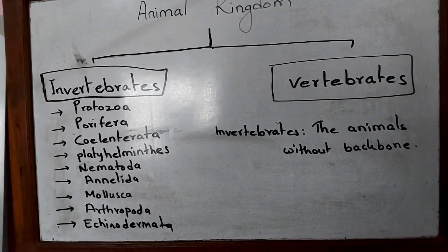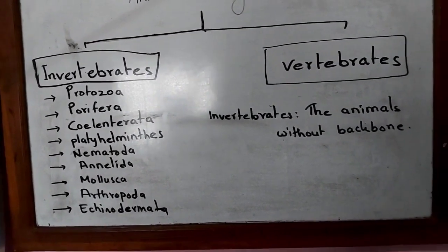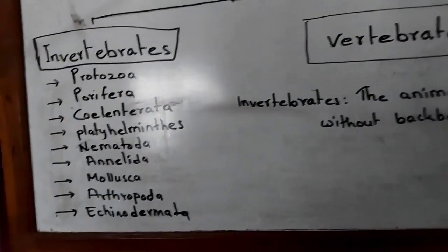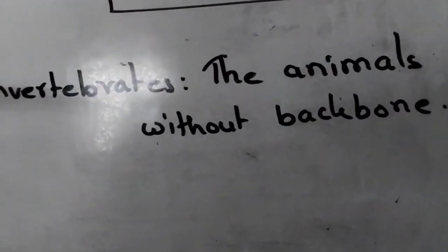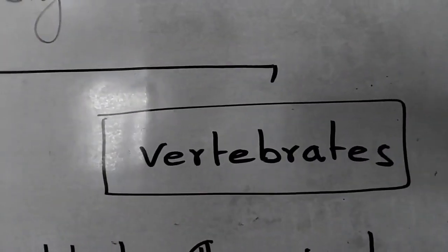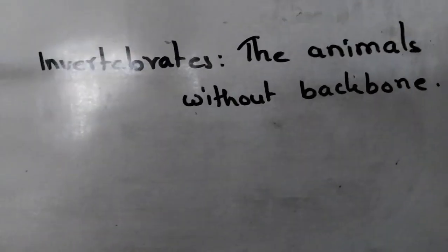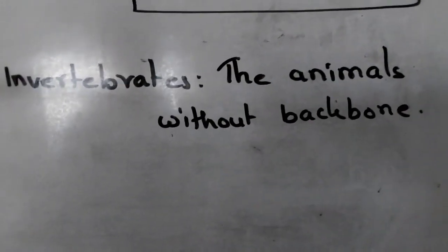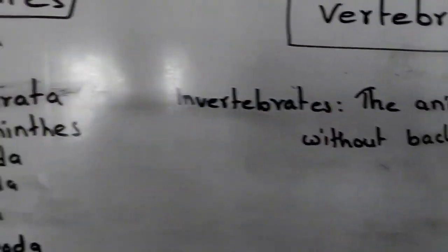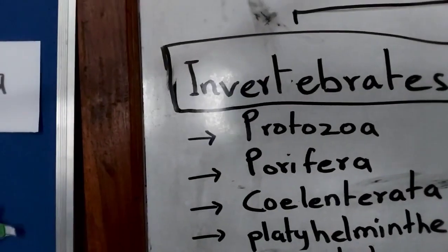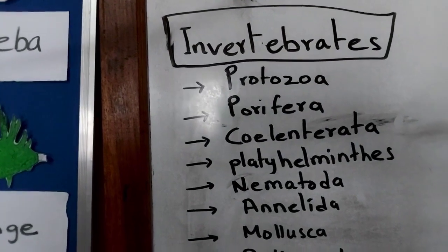Today we will be talking about invertebrates and vertebrates. Invertebrates means the animals without backbone — animals that do not have a backbone are called invertebrates. Vertebrates means the animals with backbone. We will cover vertebrates in a later video. Today we will be only focusing on invertebrates, and I hope you will be able to classify invertebrate animals into phylums according to certain physical similarities.